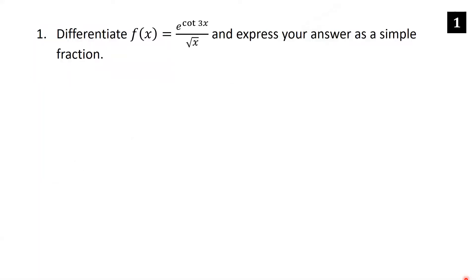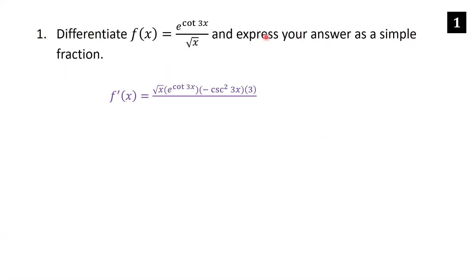Differentiate f of x equals e to the cotangent 3x over the square root of x, and express your answer as a simple fraction. Let's start to differentiate. This is a quotient rule. I'm going to do it step by step because this one's a little complicated. We start with the denominator times the derivative of the numerator, which is a triple chain rule.